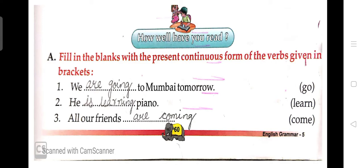Present continuous tense also records actions that started in the past but still have impact in the present. For example, if I say 'they are studying to become doctors' — the studying started in the past but continues in the present. Also, present continuous tense records planned future actions. For example, 'I am going to a party tonight' — this action is planned and going to happen in your future.